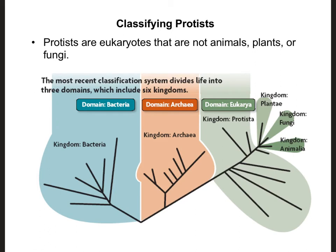Kingdom Protista is found under domain Eukarya. You can think about it as being the junk drawer of domain Eukarya, because basically what this is, is all the eukaryotes that didn't quite fit the criteria to be a plant, an animal, or a fungus.